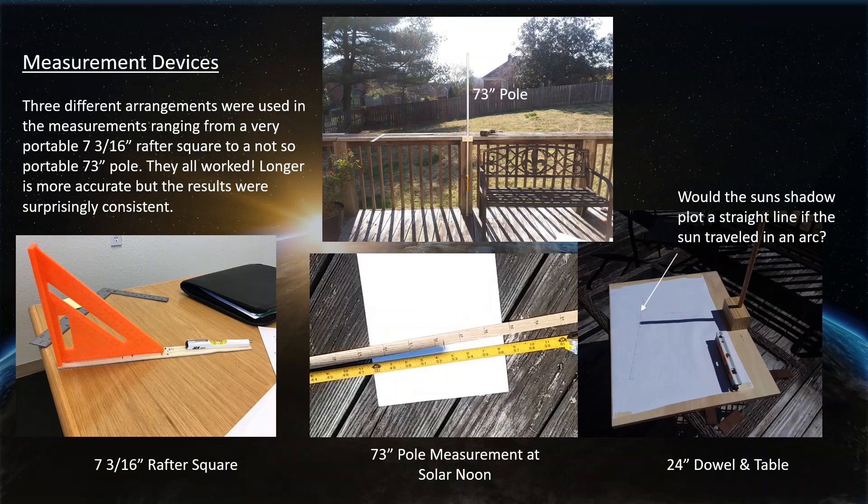What we did for measurement devices, Bob came up with the little rafter square arrangement there in the lower left corner. It's fairly small, you might question how much accuracy you could get from that. Frankly, it was surprising how accurate it was. I did two different measurements. I used a 24-inch dowel on a piece of plywood so that I could plot the sun's shadow and see what path it made. I also used a 73-inch tall aluminum pole, and you can see when I was actually making the solar noon measurement.